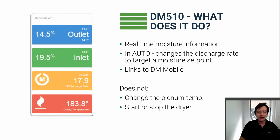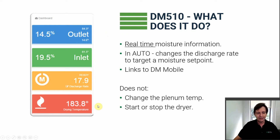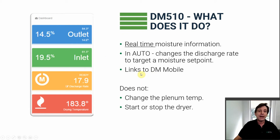If you can get internet to your Dryer Master, you can also hook up to DM Mobile — our remote access feature — so you can see the information from your dryer on your phone. Over here on the left is an example of the dashboard you would see on your phone. It gives you all that information, you can make changes to set points from your phone, and you can get a text on an alarm if you set that up.